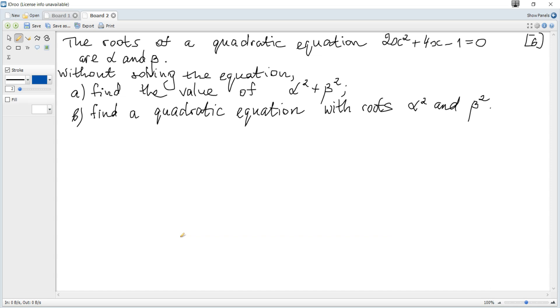The roots of a quadratic equation 2x² + 4x - 1 = 0 are α and β. Without solving the equation, find the value of α² + β² and find a quadratic equation with roots α² and β².